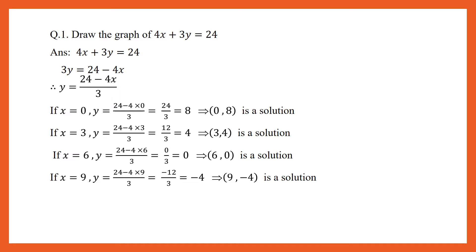Giving x is equal to 0, we can see y is equal to 24 by 3, equal to 8. Therefore, (0, 8) is a solution of our equation. As our denominator is 3, in order to avoid a fraction, we can give x as values that are multiples of 3. If x is equal to 3, y is equal to (24 minus 12) by 3, which is 12 by 3, equal to 4. Therefore, (3, 4) is the second solution.